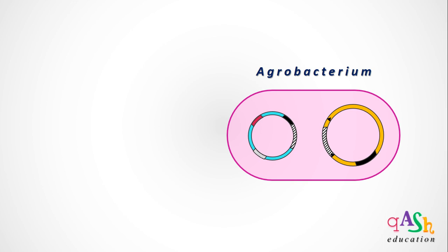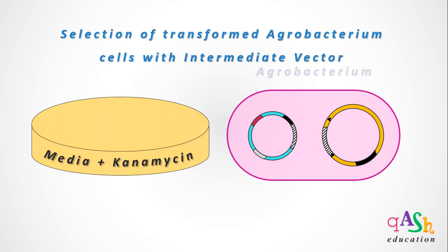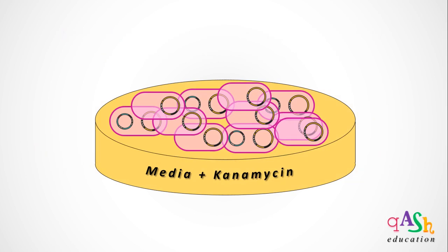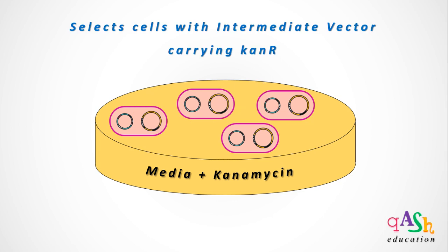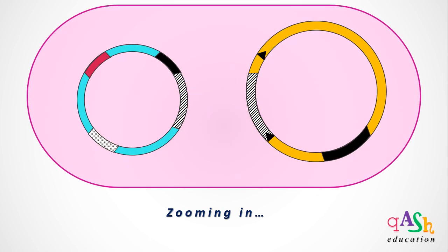Out of a mix of transformed and untransformed agrobacterium cells, selection has to be made on a selective media containing kanamycin. The transformed and untransformed agrobacterium cells are inoculated in a media containing kanamycin. Only the cells that contain both plasmids, including the intermediate vector carrying the kanamycin resistance gene, will be able to grow on this selective media. This is how we make the selection of transformed agrobacterium cells.